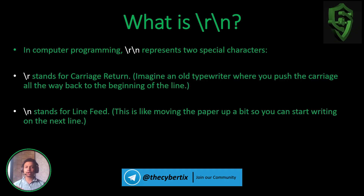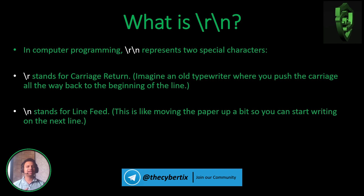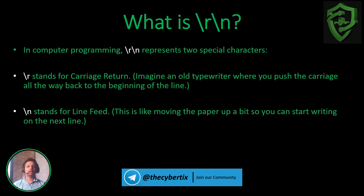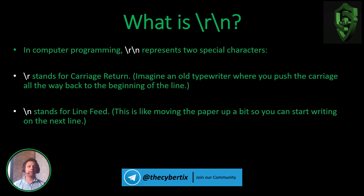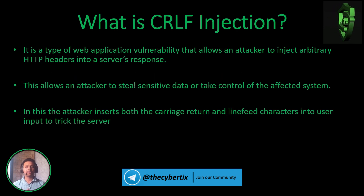In computer programming, \r\n represents two special characters. \r stands for Carriage Return — imagine an old typewriter where you push the carriage all the way back to the beginning of the line. \n stands for Line Feed, like moving the paper up so you can start writing on a new line. Now that we understand CRLF, let's look at what CRLF injection means.